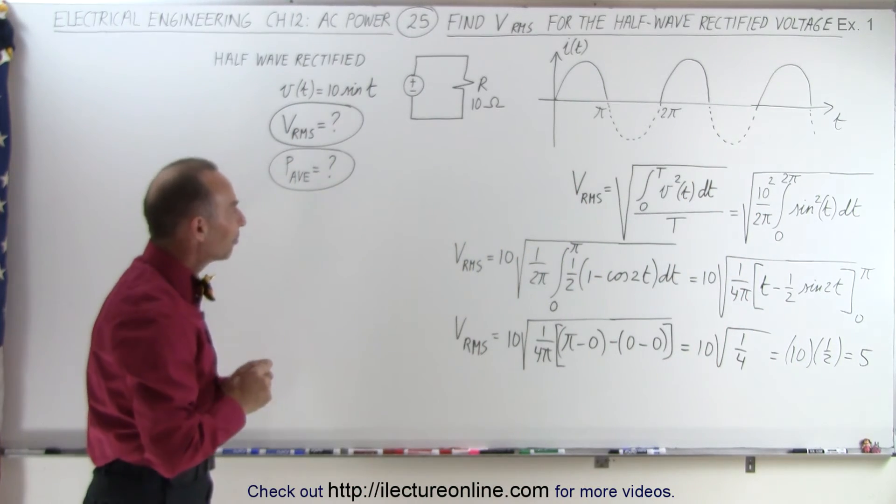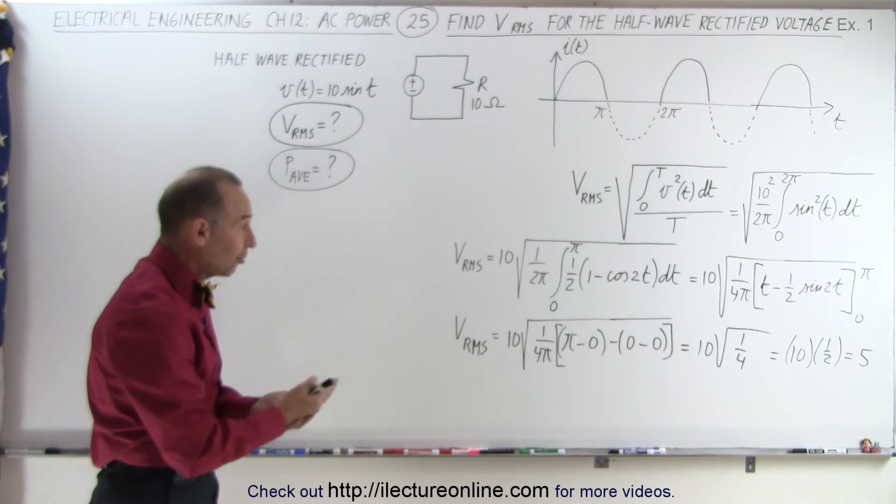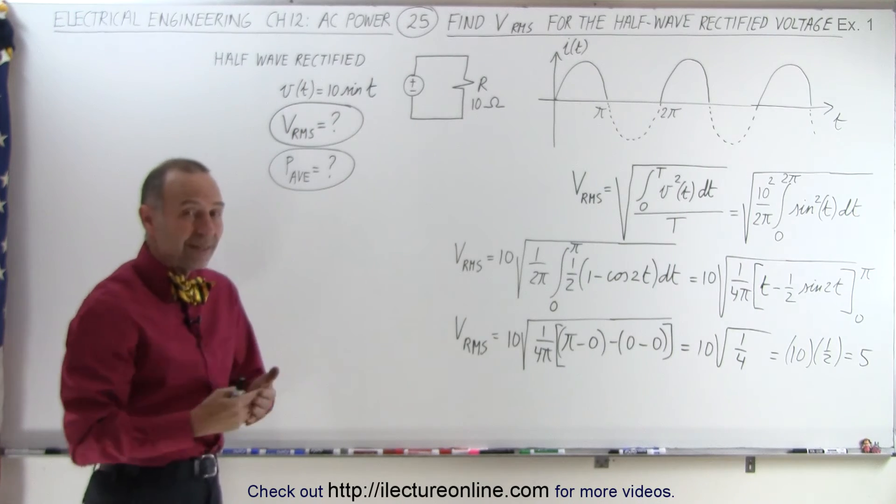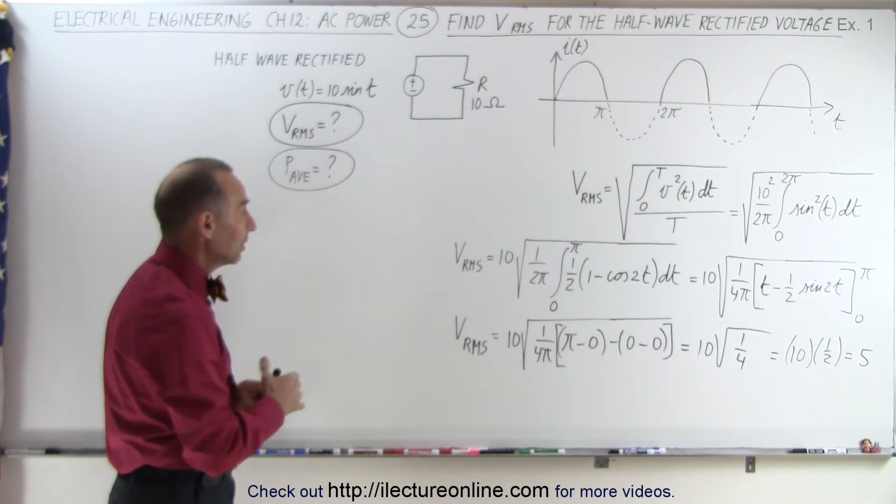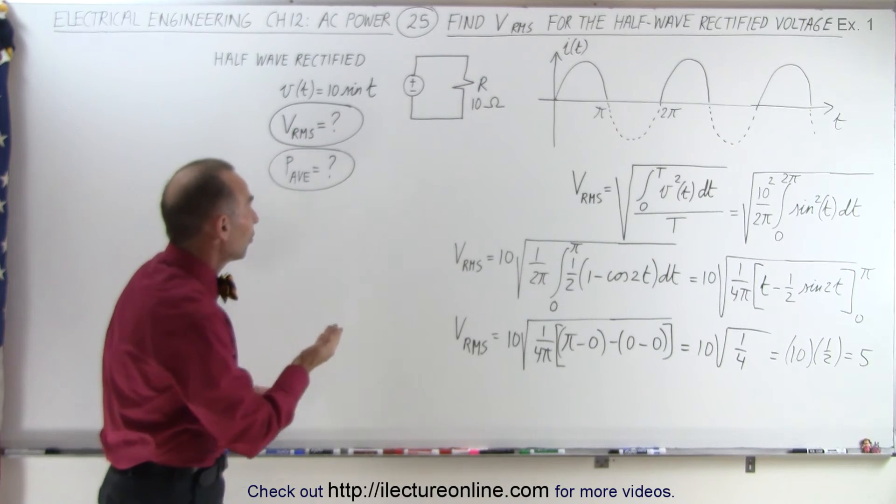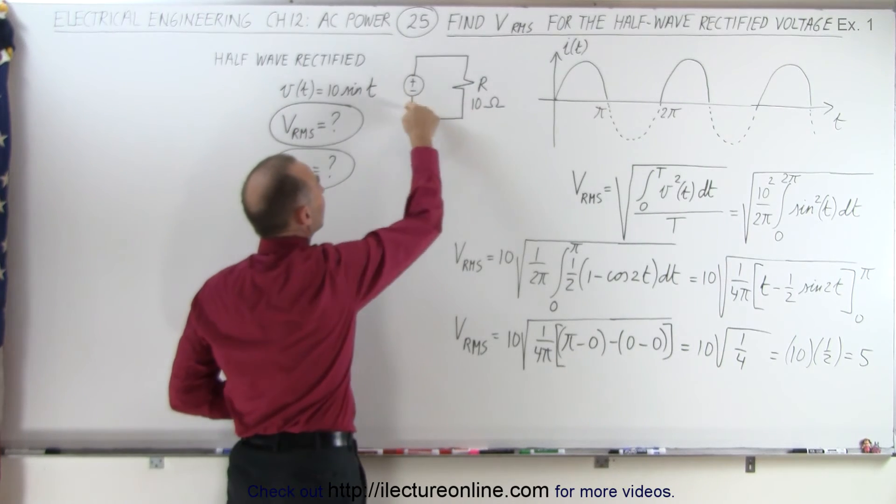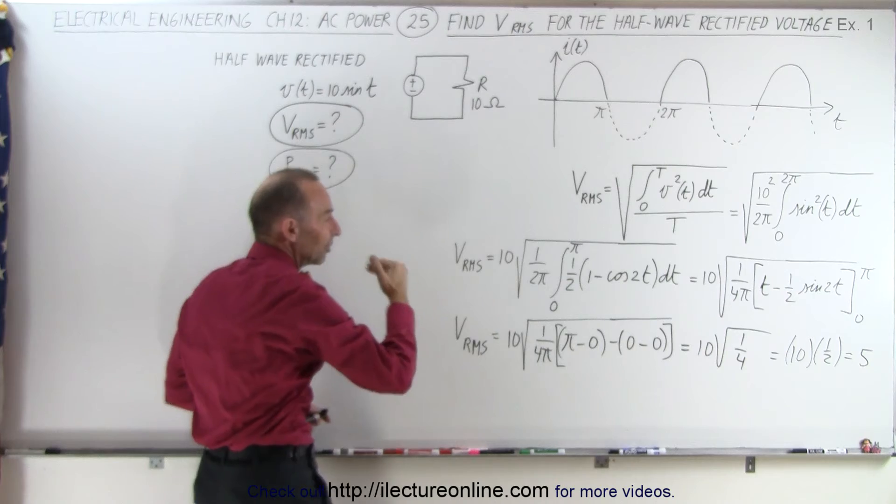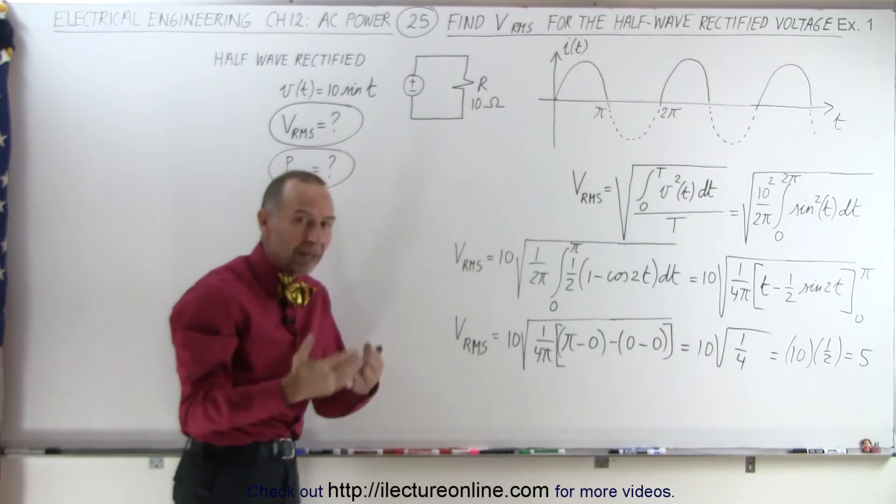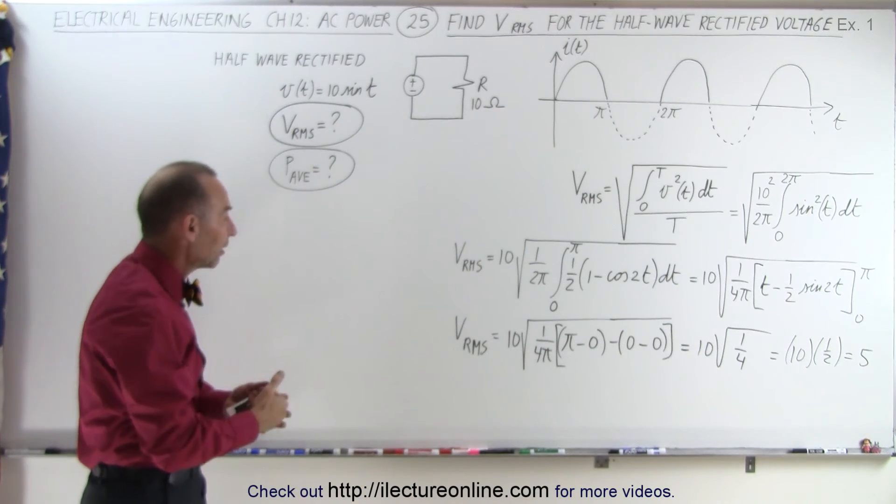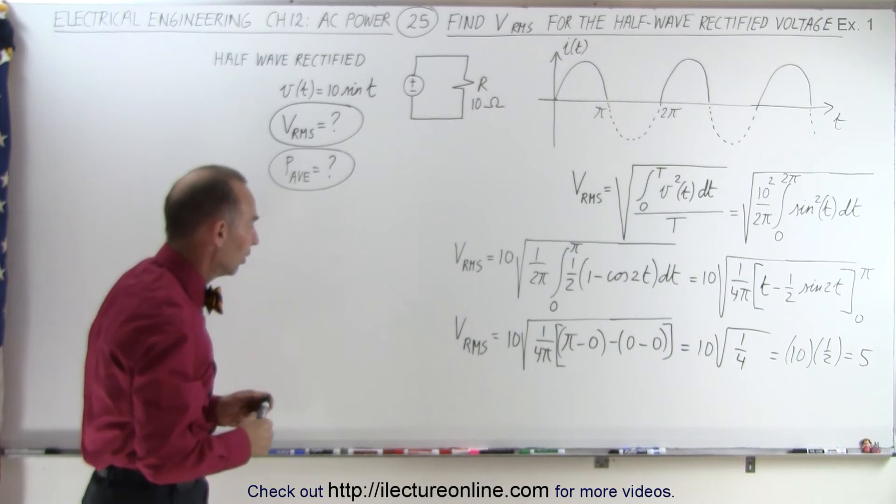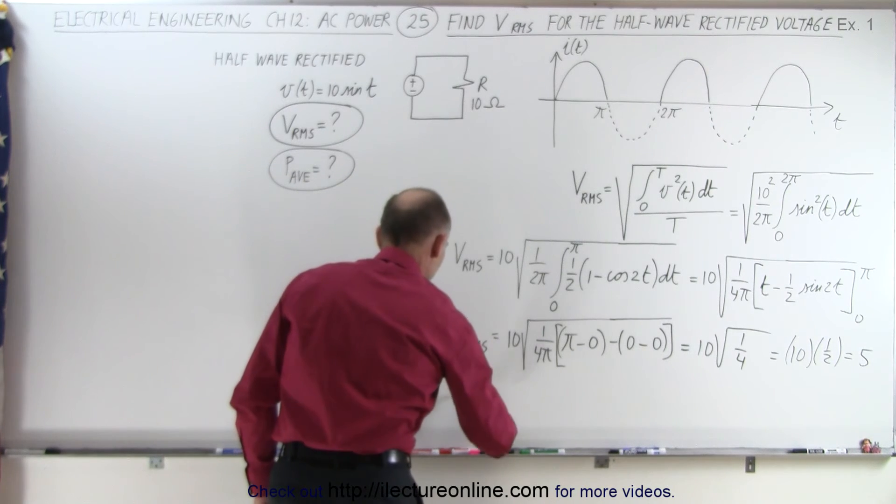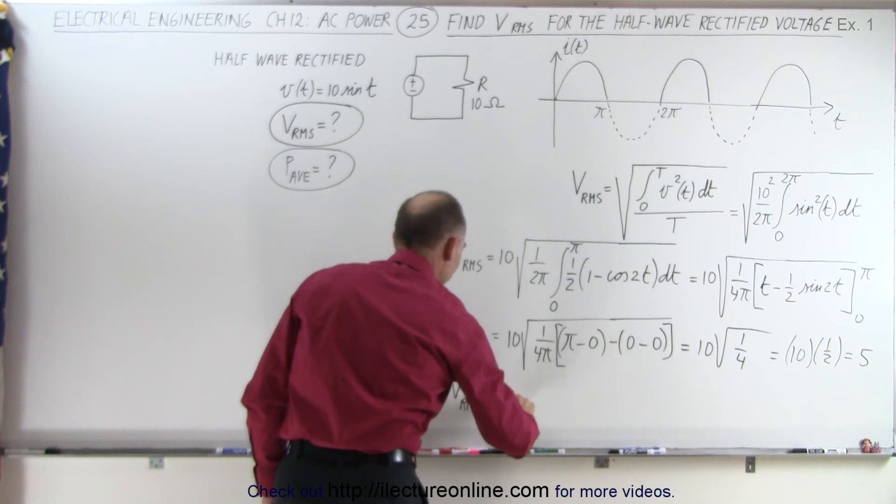So that's the RMS voltage, the root mean square voltage, the effective voltage. That means that we can replace the alternating voltage source by a single DC voltage, a voltage that supplies a constant 5 volts that gives the exact same result in the circuit. So in other words, the VRMS is simply a DC voltage of 5 volts.